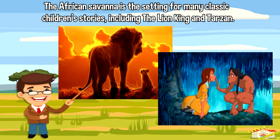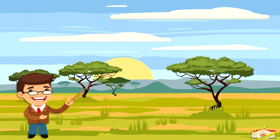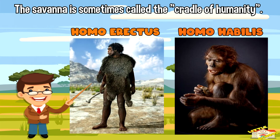The African savannah is the setting for many classic children's stories, including The Lion King and Tarzan. The savannah is sometimes called the cradle of humanity, because many early human species such as Homo erectus and Homo habilis are thought to have lived there.